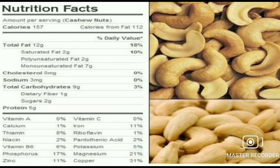The total amount of calories are 157, total fat is 12 grams, protein is 5 grams. The percentage of vitamin A is 0%, zinc is 11%, phosphorus is 17%, iron is 11%, potassium is 5%, magnesium is 21%, copper is 31%.